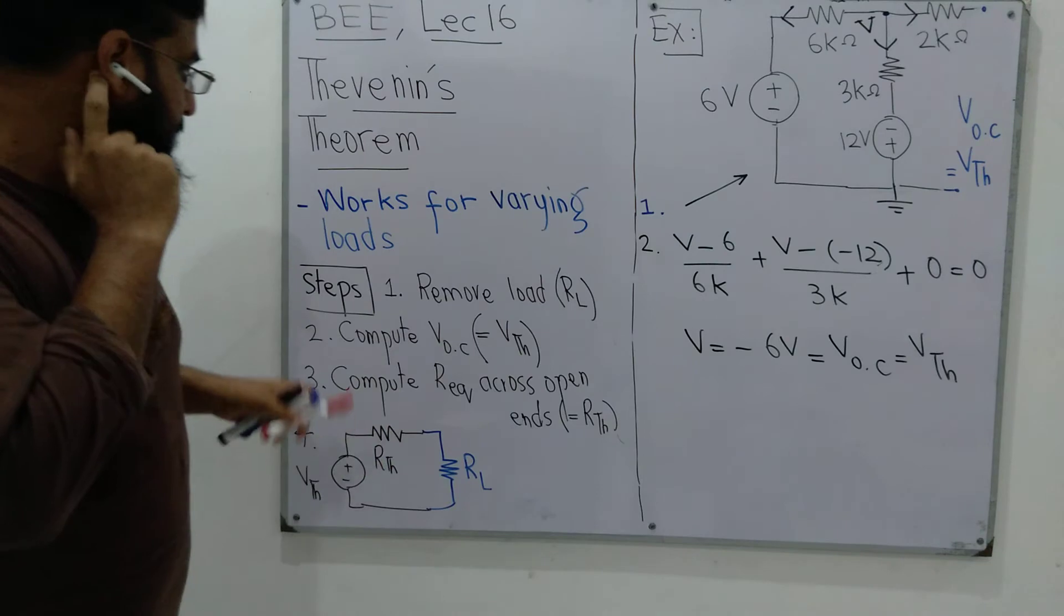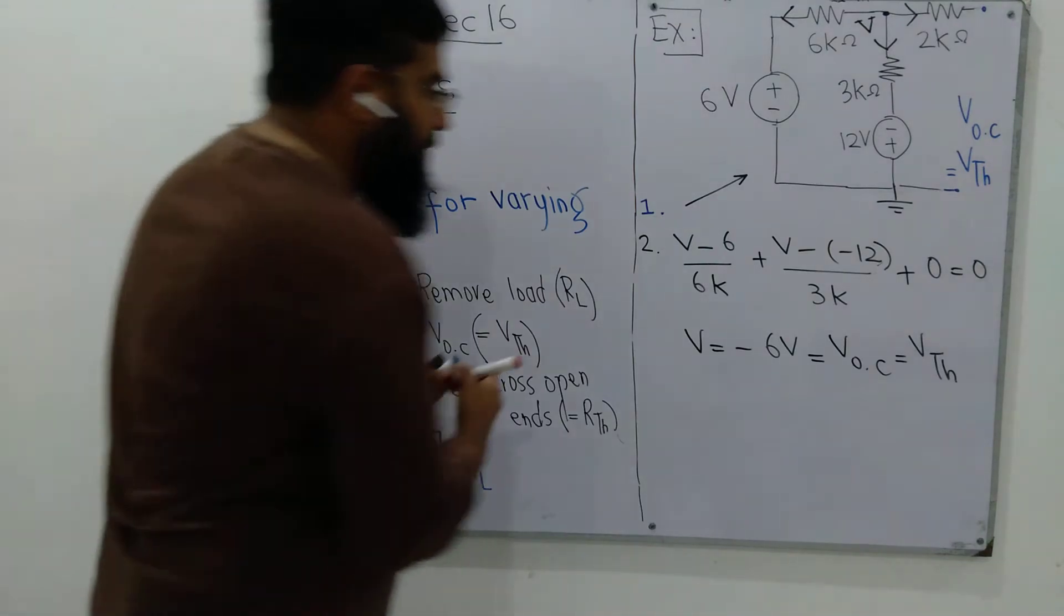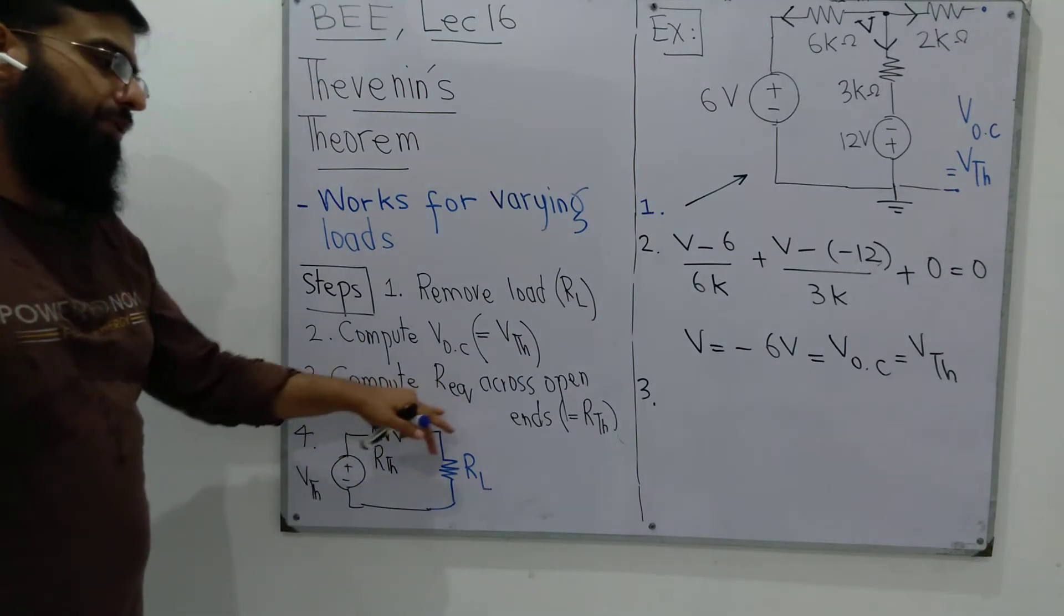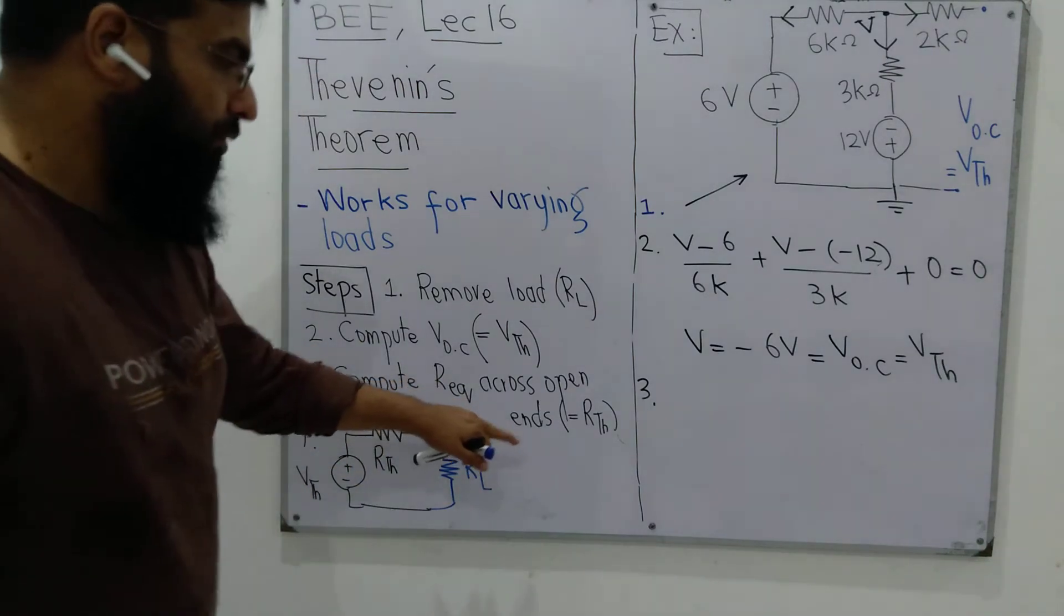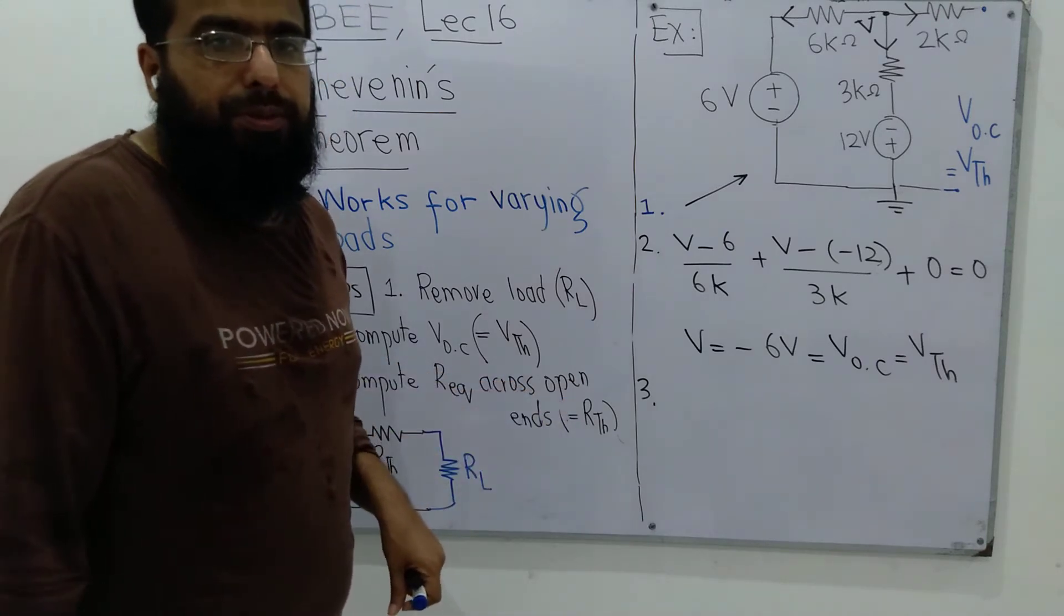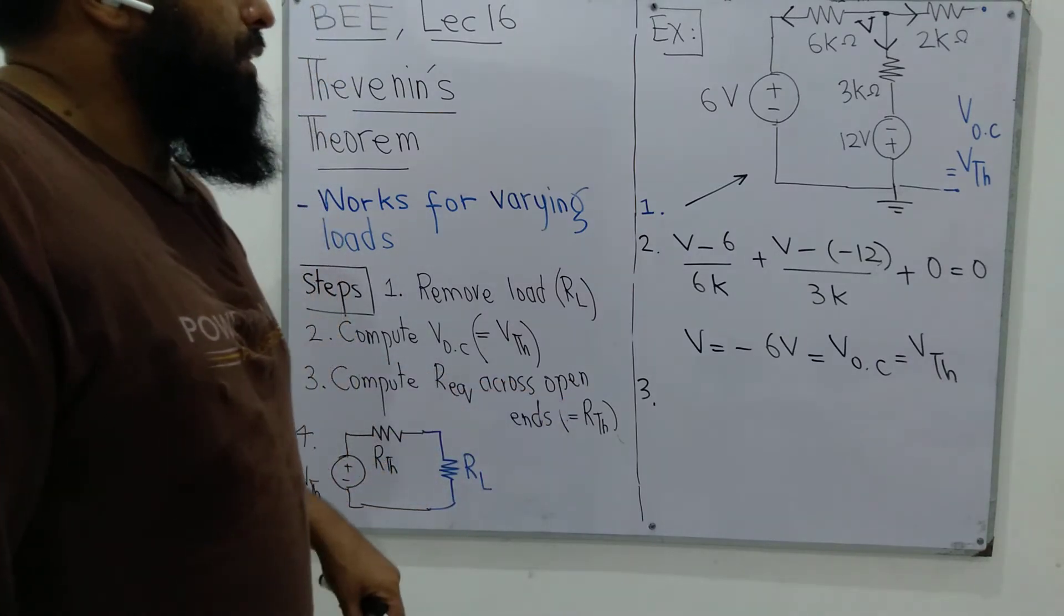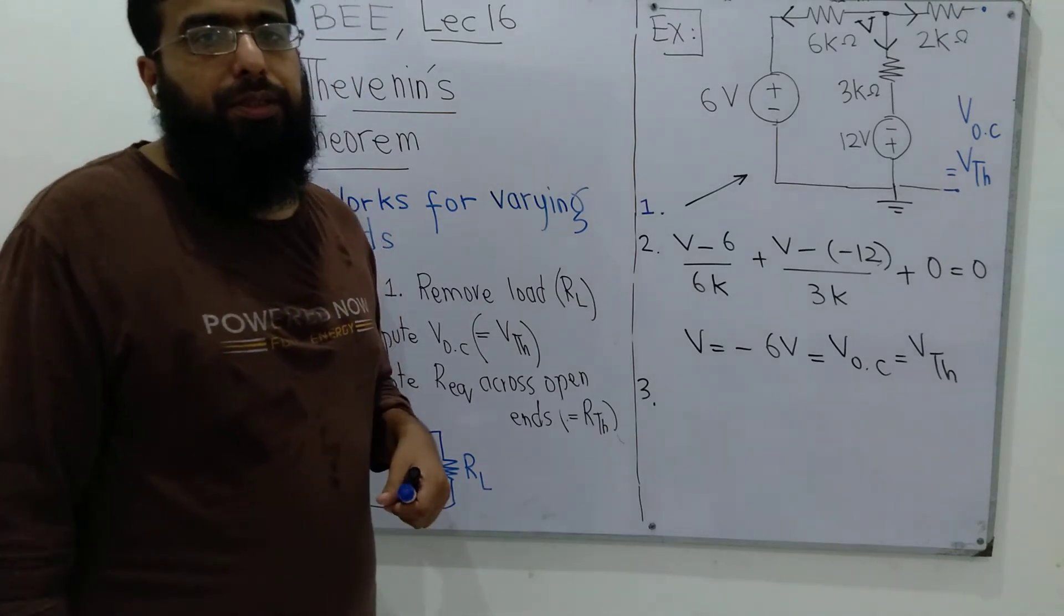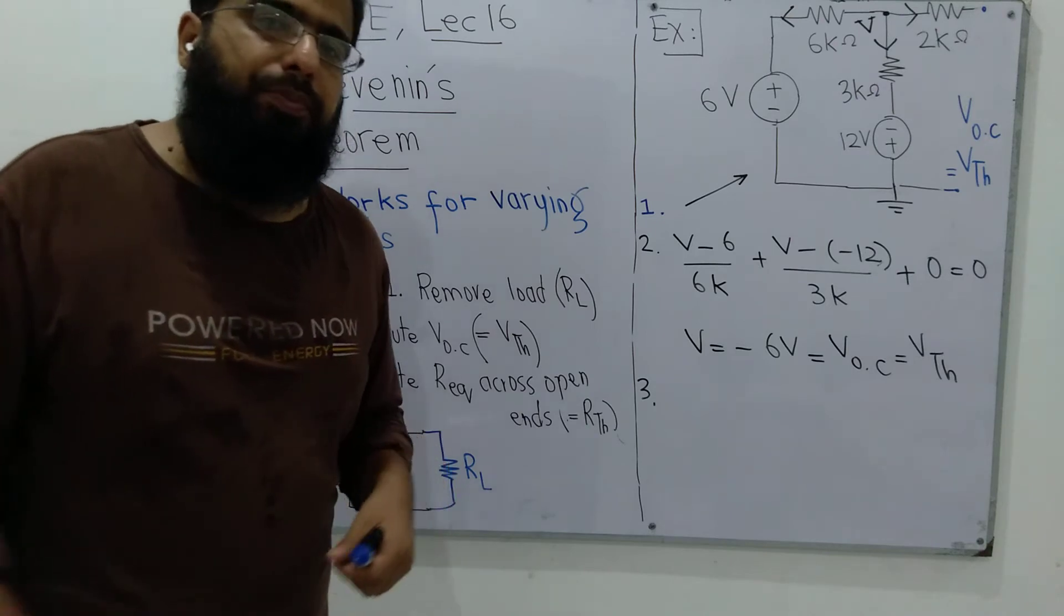In step number 3, we have to compute R equivalent across open ends. But before we compute R equivalent, we already studied in superposition theorem that we have to replace sources. For a voltage source, the equivalent resistance is 0, so it is replaced with a short circuit. A current source is replaced with an open circuit.